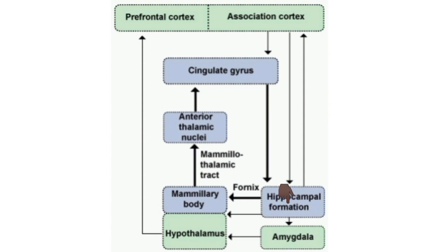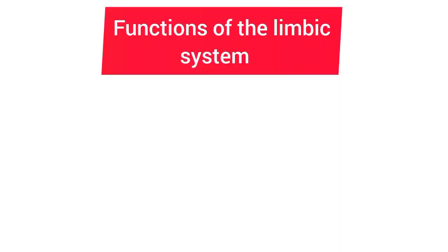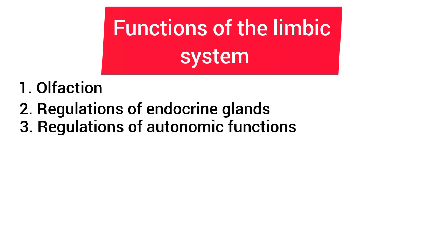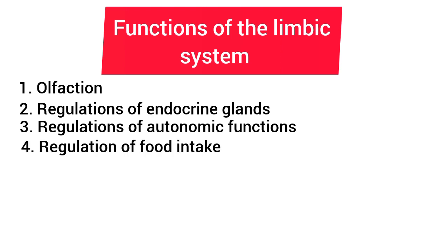The Papez circuit plays an important role in memory and coding. The functions of the limbic system include: 1. Olfaction — the piriform cortex and the amygdala nucleus form the olfactory centers; in lower animals the amygdala nucleus is concerned primarily with olfaction. 2. Regulation of endocrine glands — the hypothalamus plays an important role in the regulation of the endocrine system. 3. Regulation of autonomic functions — the hypothalamus regulates heart rate, blood pressure, water balance, and body temperature. 4. Regulation of food intake — along with the amygdala complex, the feeding center and satiety center present in the hypothalamus regulate food intake.